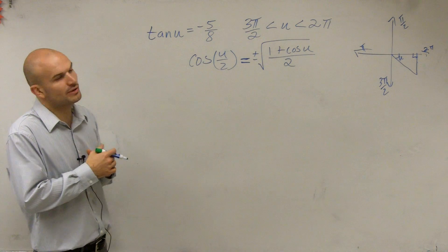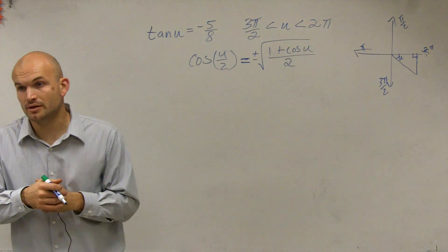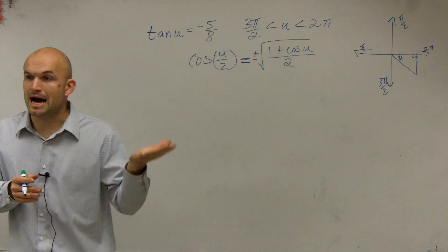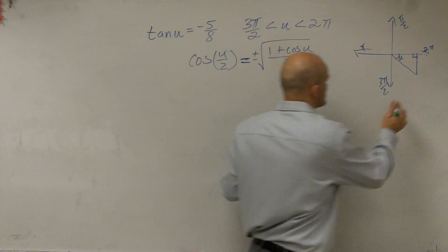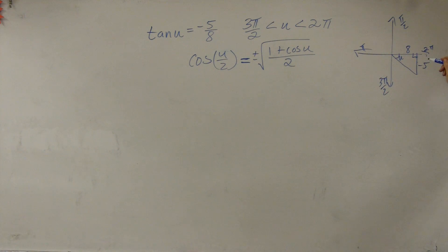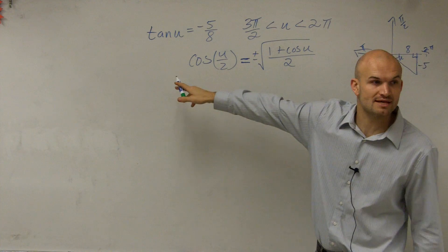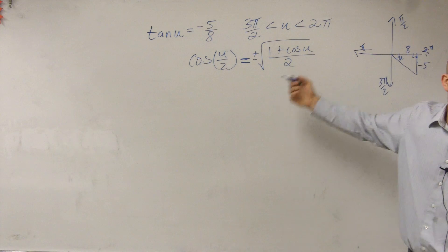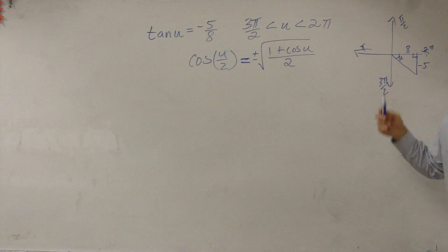So we have the tangent of u equals negative 5 over 8. Now remember, tangent is opposite over adjacent. So we have negative 5 over 8. Does that make sense with the way my triangle is? Then we need to figure out our hypotenuse, because we're asking to find cosine. Cosine is adjacent over our hypotenuse, and we don't know what our hypotenuse is.